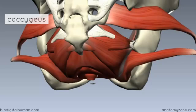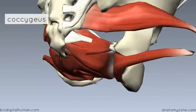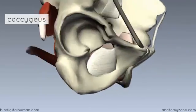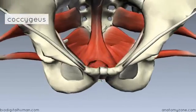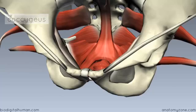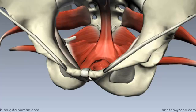The coccygeus functions to support the pelvic floor and is innervated by branches from the anterior rami of S4 and S5. The levator ani muscle is innervated by branches of the pudendal nerve from roots S2 to S4 — giving the useful mnemonic 'S2, 3, 4 keeps shit off the floor,' which describes the function of the levator ani. We've now covered the pelvic diaphragm in detail, and the next part of the pelvic floor is the perineal membrane and the deep perineal pouch.